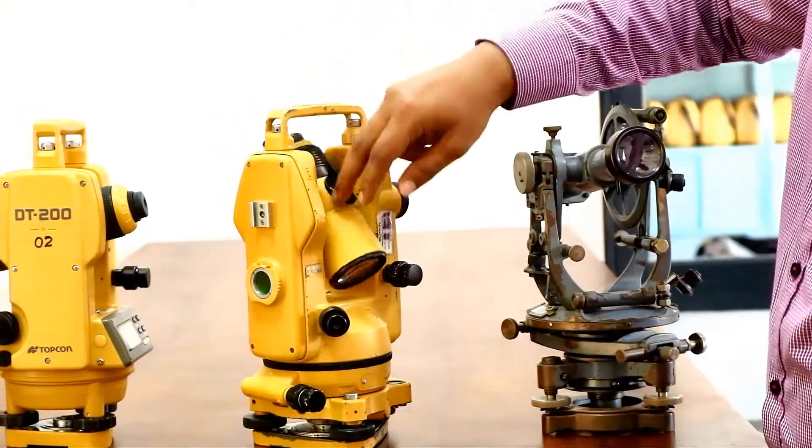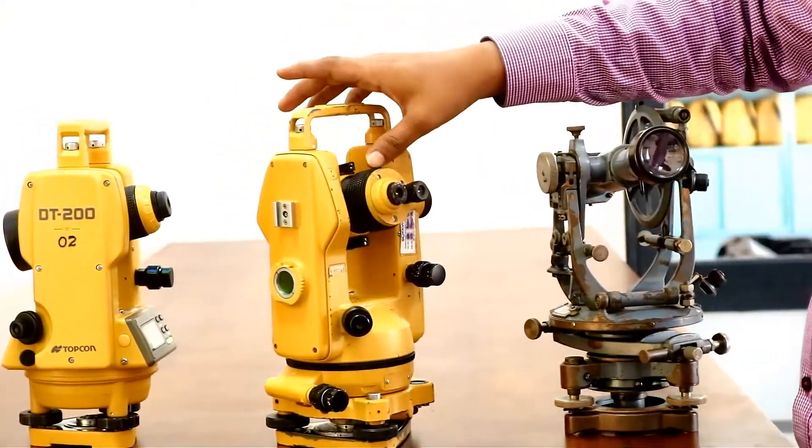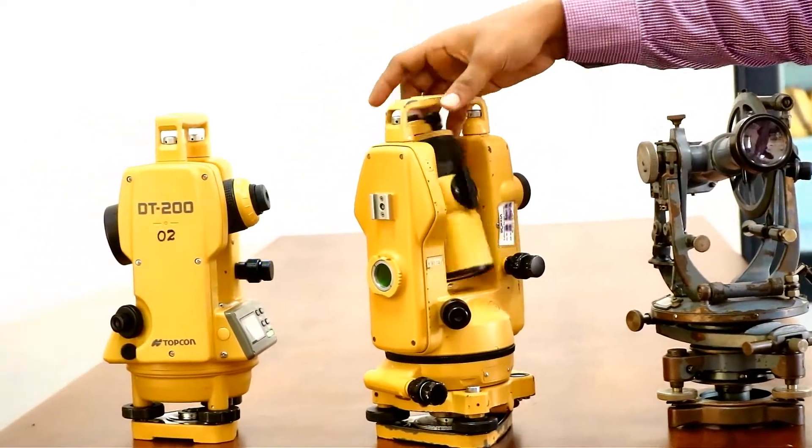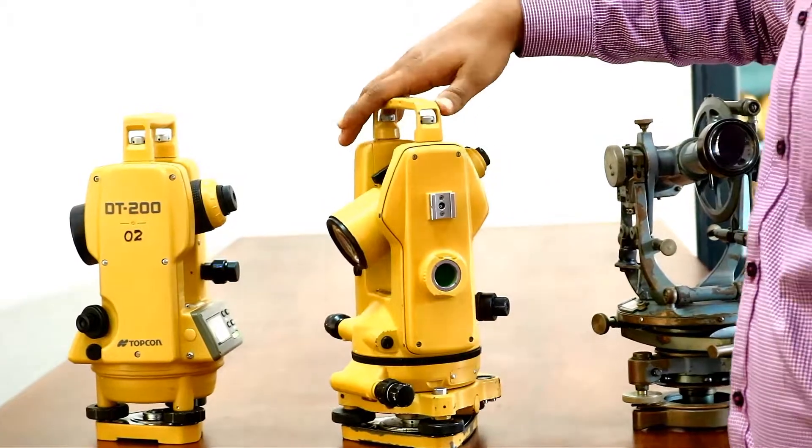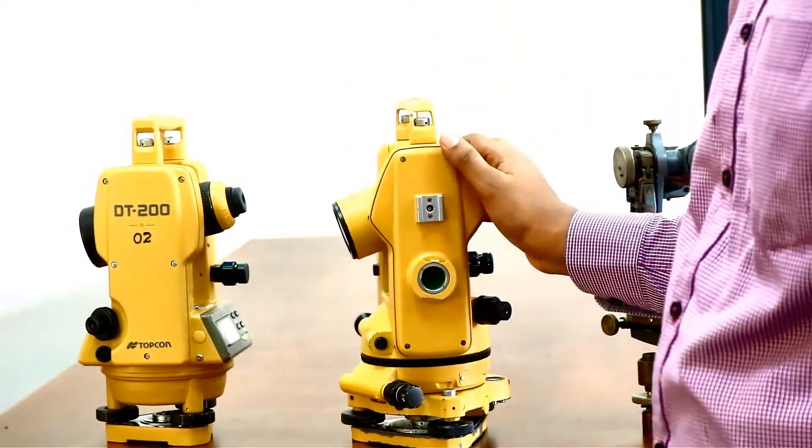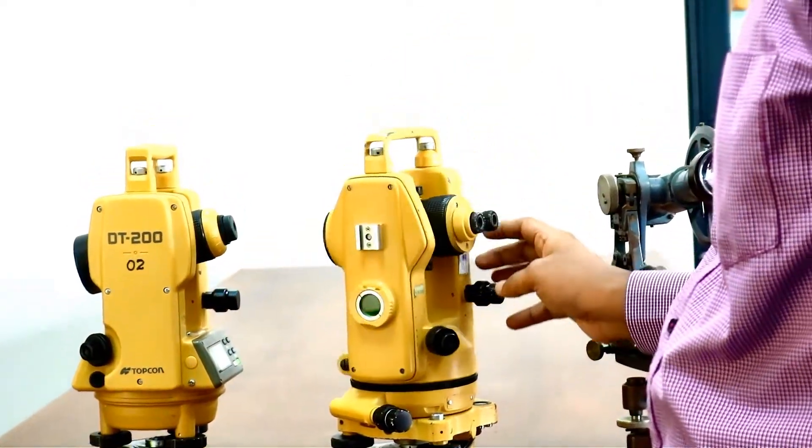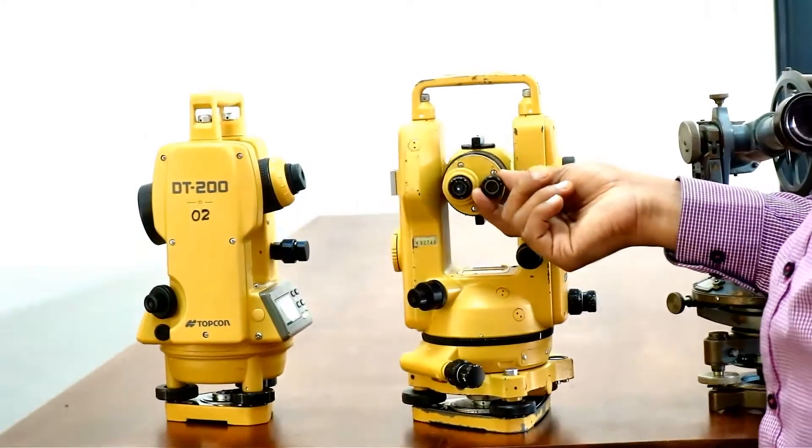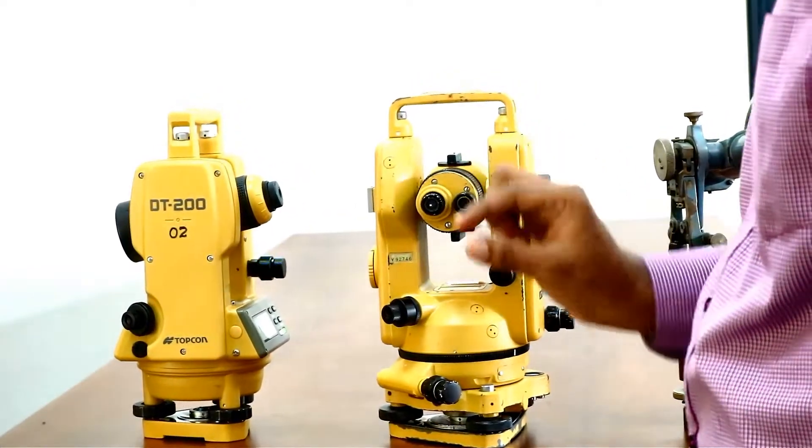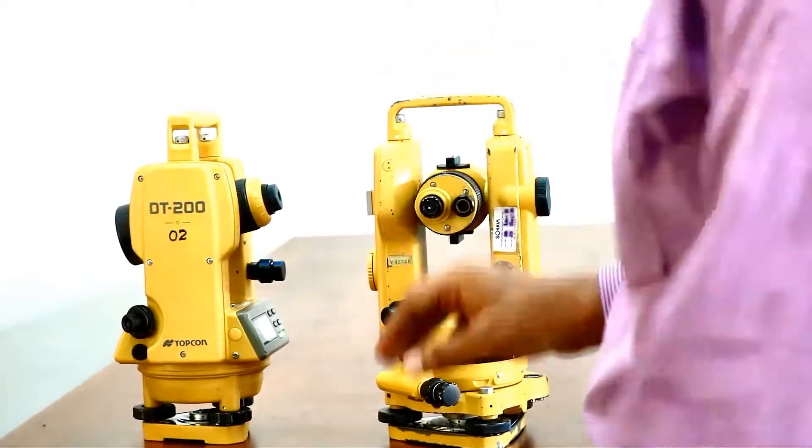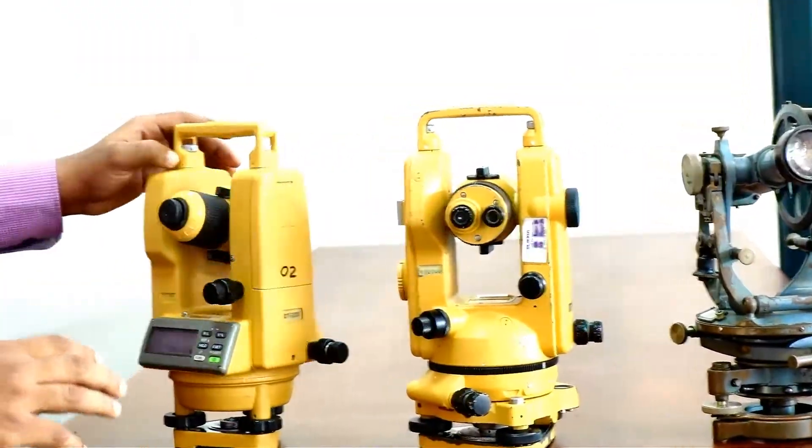So the telescope can be rotated fully above the trunnion axis. So this is also a transit theodolite, but it has a special name. It is called the micrometer theodolite. The eyepiece you have to measure the angular means. So this is the modern form of the theodolite.